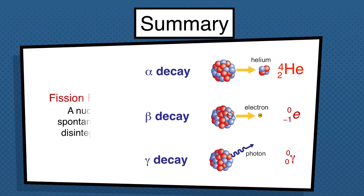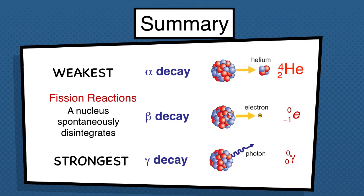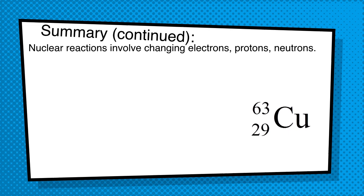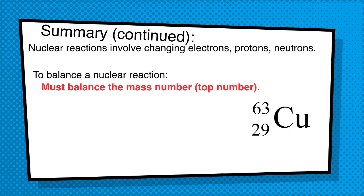Remember that in fission reactions the nucleus spontaneously disintegrates — it breaks apart. The weakest decay is at the top and the strongest is at the bottom. Nuclear reactions involve changes in protons and neutrons, and we have to balance out the reaction: you must balance the mass number — the top number — and you must balance the bottom number.